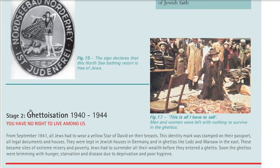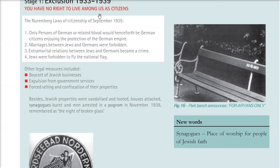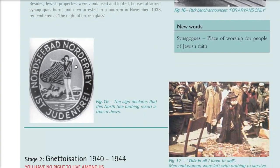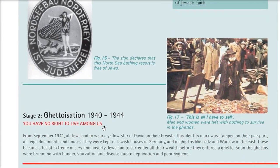Step two was ghettoization. First Jews had no right to live among Germans as citizens; then they had no right to live among them at all. They were forced to live in ghettos — areas marked by hunger, starvation, disease, poor hygiene, and deprivation.